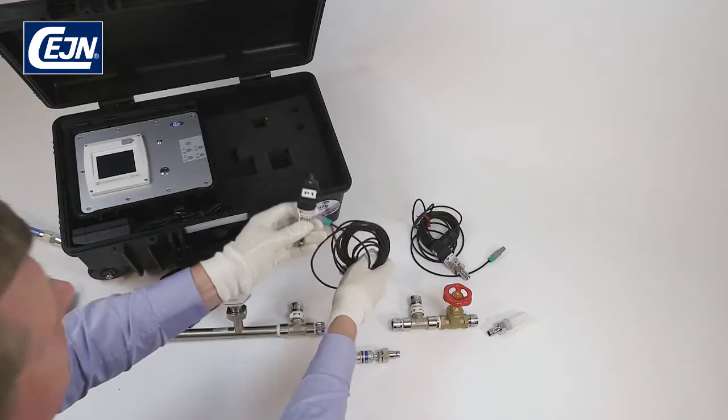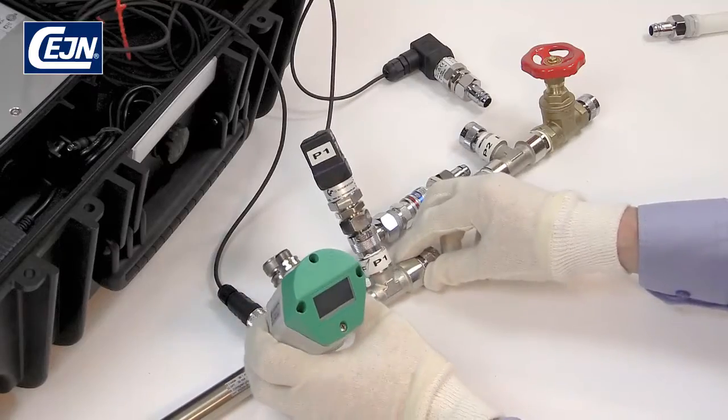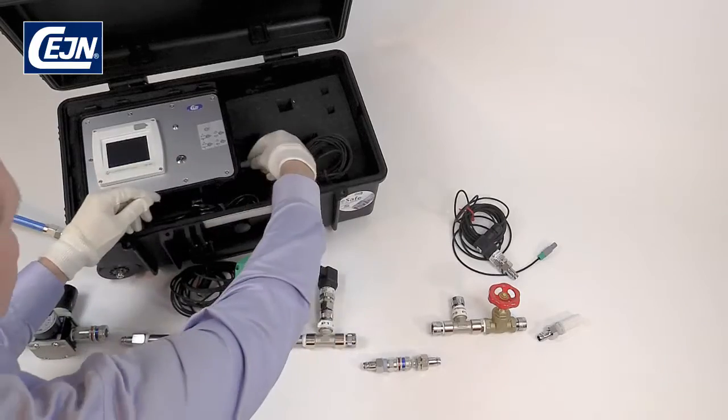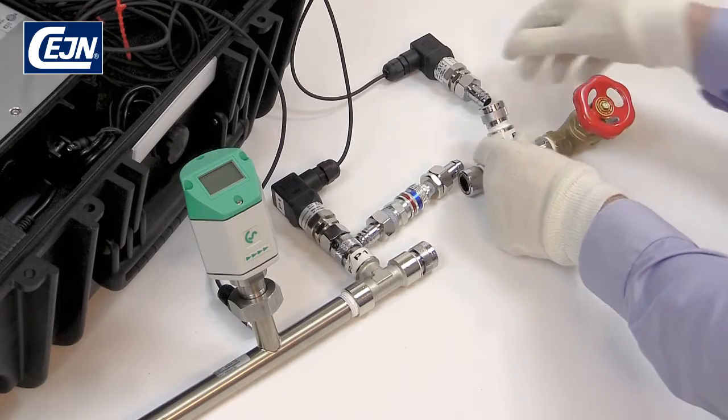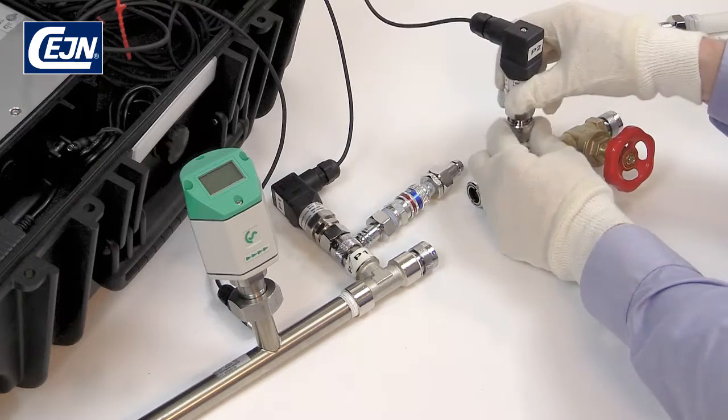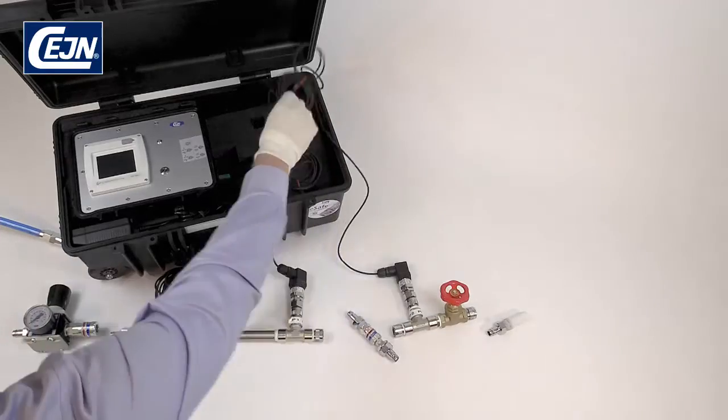Now we'll assemble all the components. Take the pressure sensor P1 and connect it with P1 on the flow pipe. Plug the cable into the control box. Then connect the sensor P2 with P2 on the end flow pipe and plug the cable into the control box.